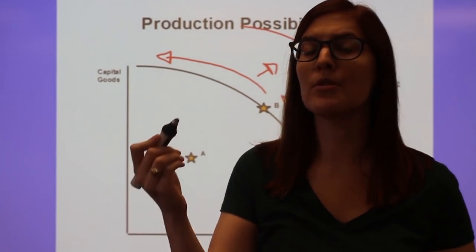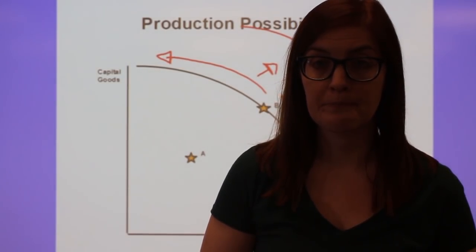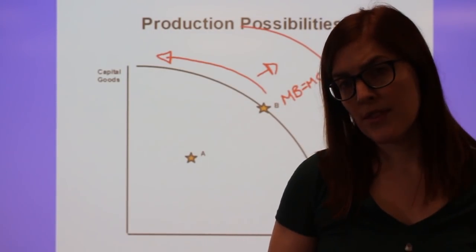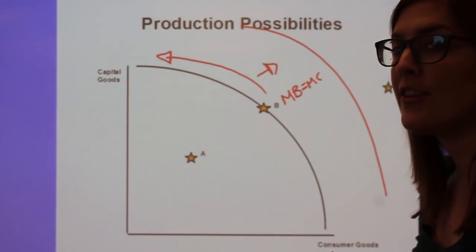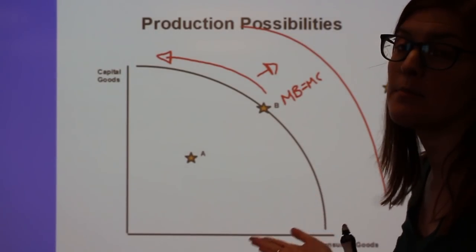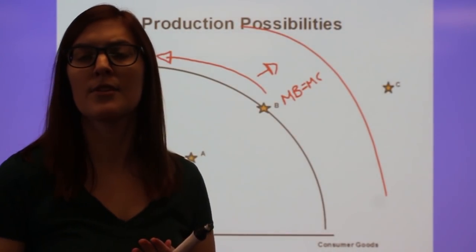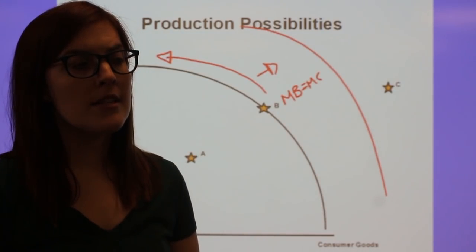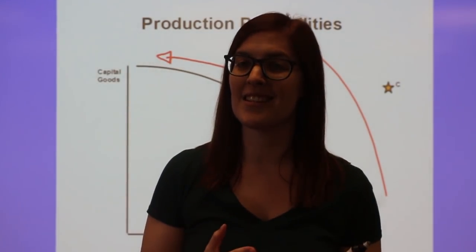So, again, that focus on capital leads to long-run growth. Also with this graph, I want to talk about why we have it on here as a bowed-out curve as opposed to a straight line. You may see it as a straight line on the AP exam. That stands for the production possibilities frontier.